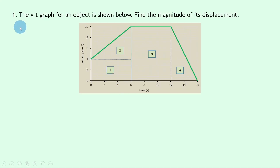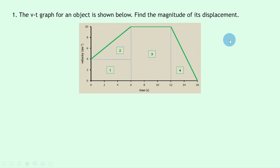Let's get started. Question one says: the velocity-time graph for an object is shown below — find the magnitude of its displacement. Remember, displacement is a vector, and the magnitude of displacement basically just means the distance, the size part of the displacement. So we're just trying to find a distance value in meters; we don't need a direction.